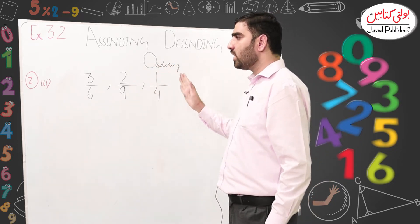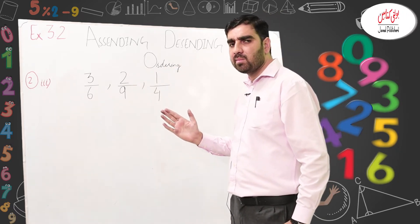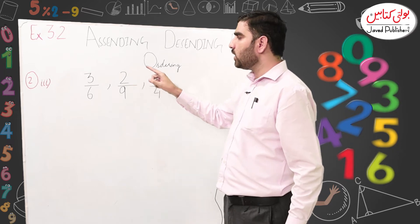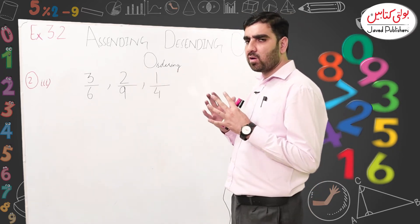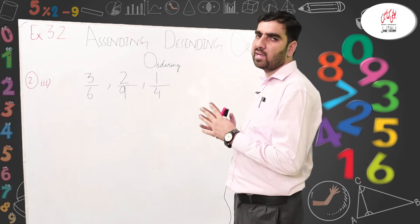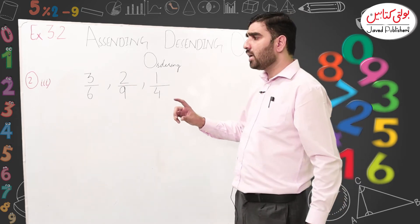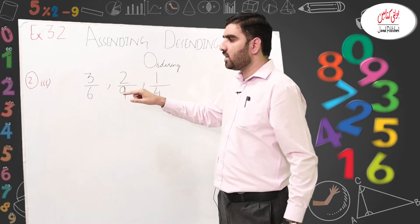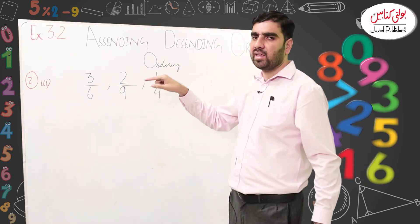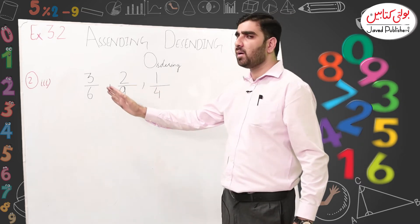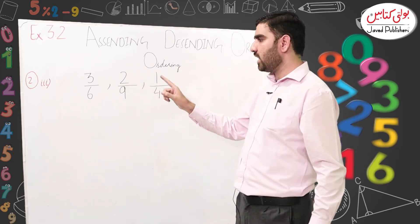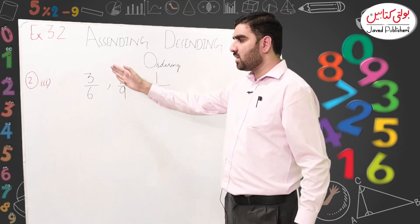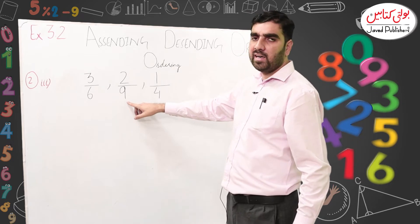We have to convert these into like fractions by multiplying the numerator and denominator so that the denominators become the same. We have denominators 6, 9, and 4. We can make all of them 36. If we multiply the first fraction by 6, the denominator becomes 36.